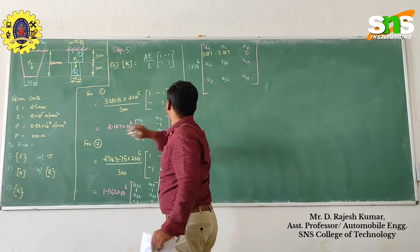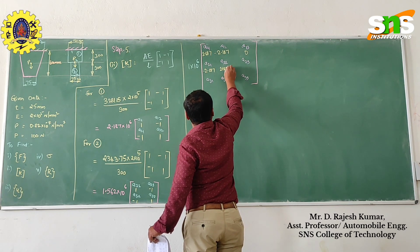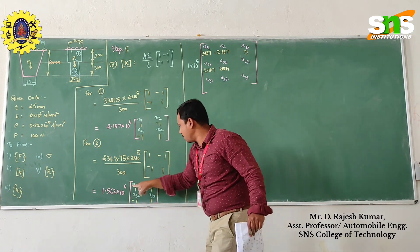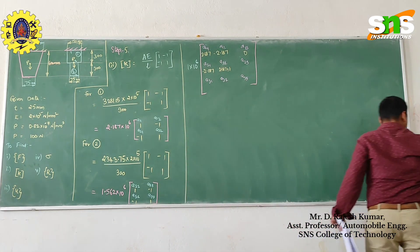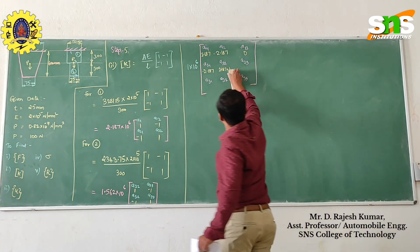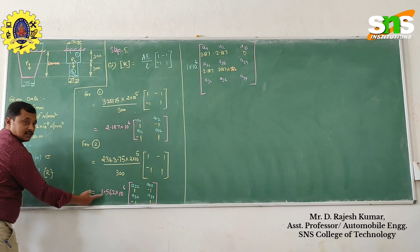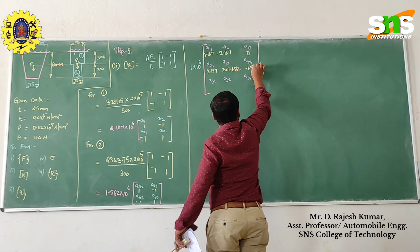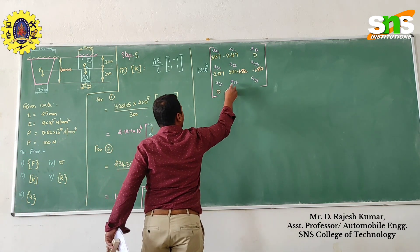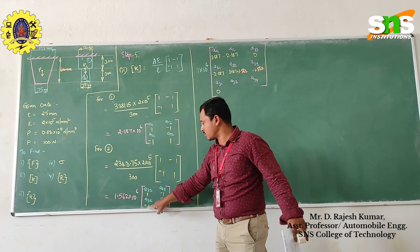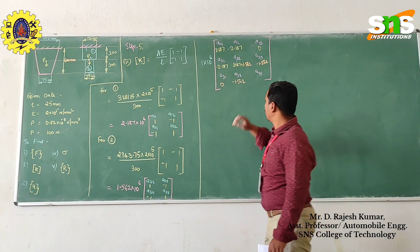Now A21: what is A21? Minus 2.187. What is A22? According to element number 1, A22 is 2.187; according to element number 2, A22 is plus 1.562. So plus 1.562 comes from element number 2. What is A23? Minus 1.562. What is A31? Zero. What is A32? Minus 1.562. What is A33? 1.562.